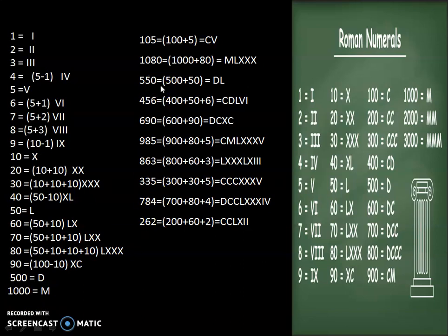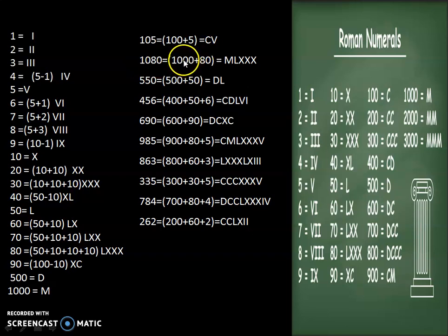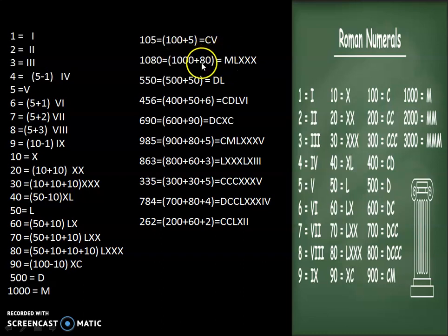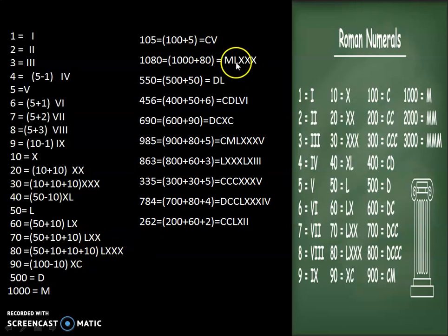Now let's look at a few more numbers. For 1080, we split it as 1000 plus 80. 1000 is written as M, and 80 is LXXX. So 1080 is written as MLXXX in Roman numerals.